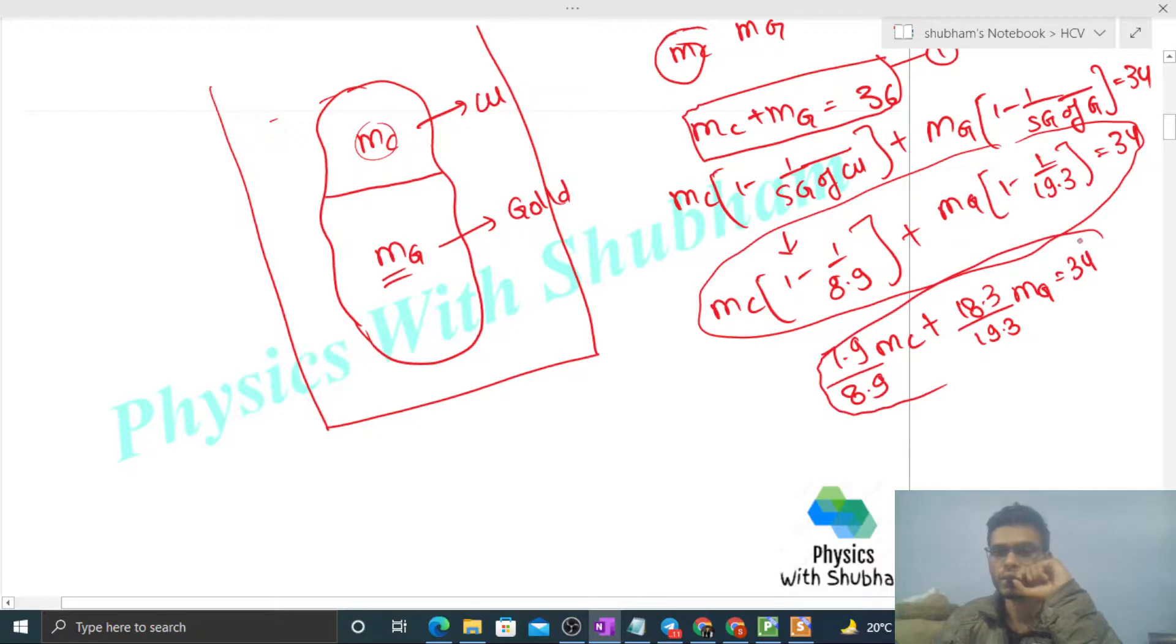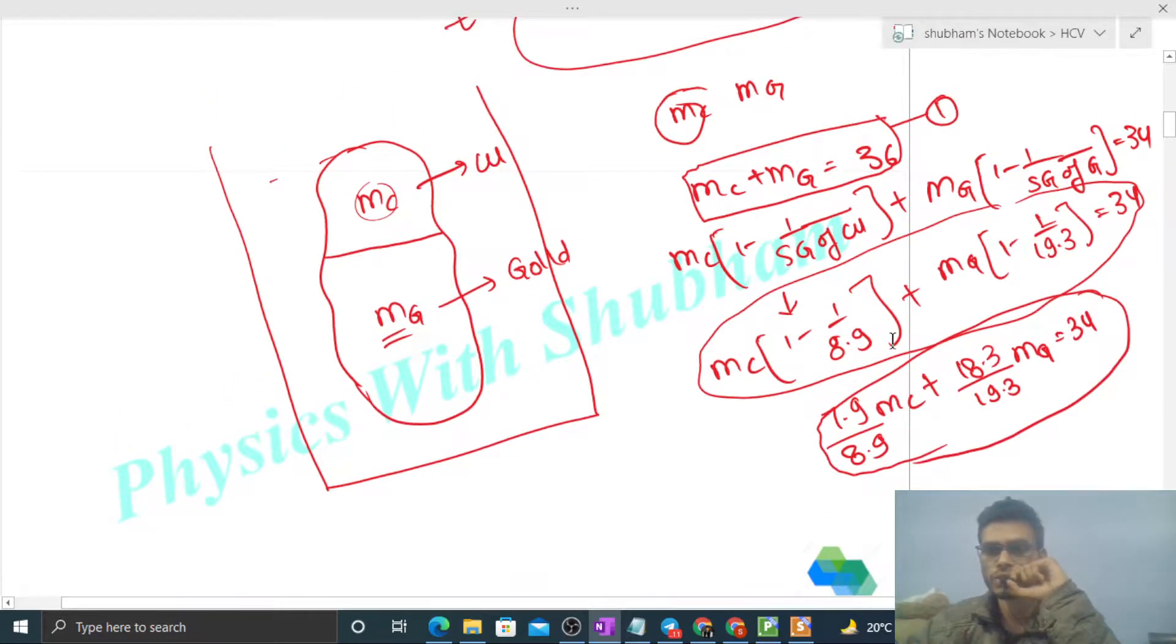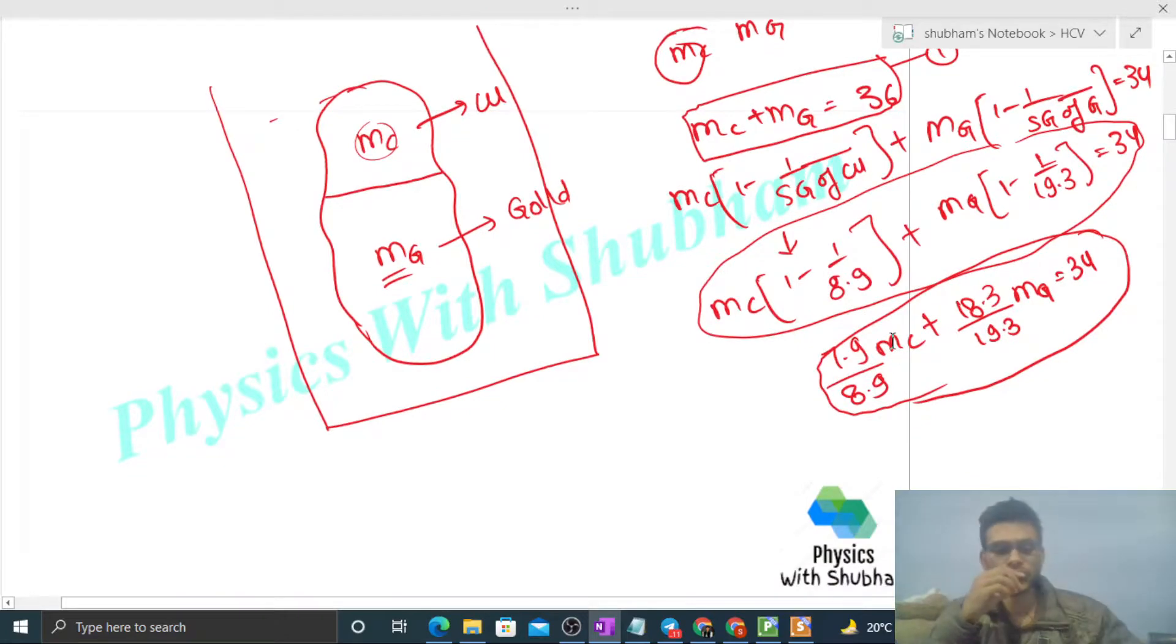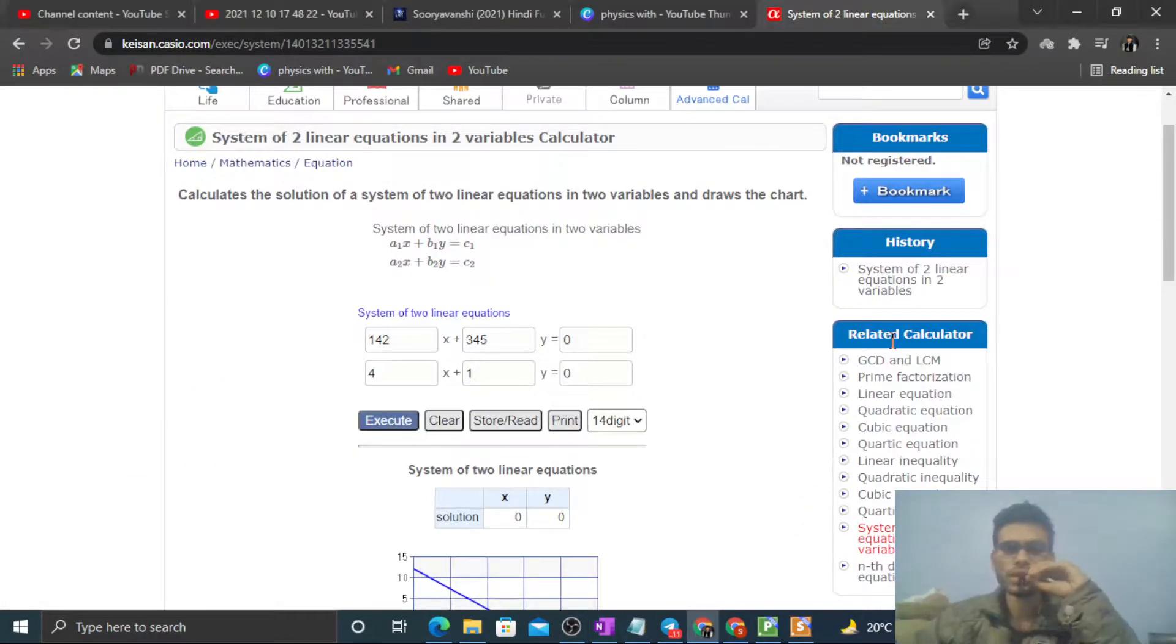Two equations, two variables. I don't think we need to discuss how to solve this in detail, so let's save some time. Let me use a calculator. You see how we can use the calculator: here one, here one, that is 36, and here it will be 7.9 divided by 8.9.